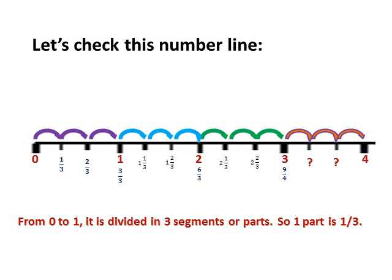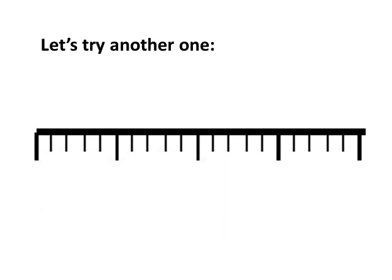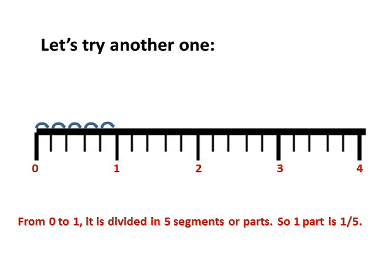Let's try another one. How many subdivisions do we have between the longer lines? The longer lines are zero, one, two, three, four. Between zero to one, let's count: one, two, three, four, five — there are five parts between zero to one. Since there are five parts, we call one part as one fifth. So the first one would be one fifth, the next two fifths, three fifths, four fifths, and five fifths. Five fifths is equal to one because the numerator and denominator are the same.